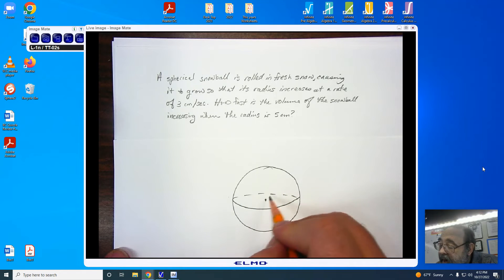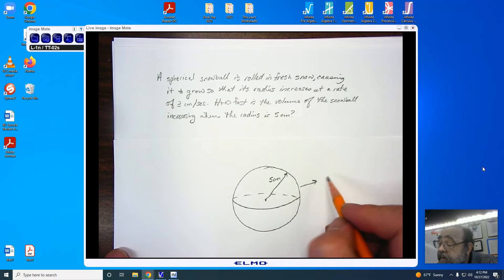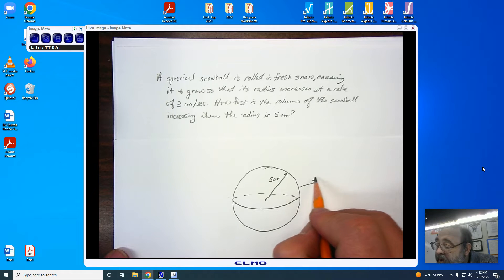I'm told that the radius is 5 centimeters, and I know it's expanding as we roll it, and this expansion is my r prime, and r prime is 3 centimeters per second.